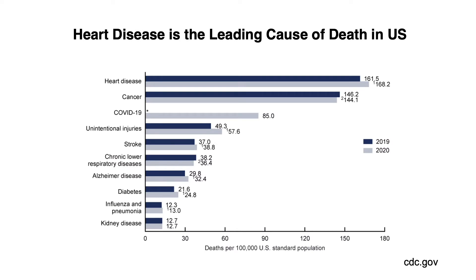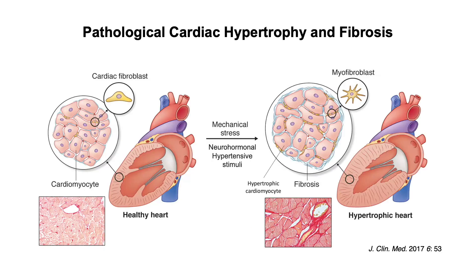Heart disease is the number one killer in the U.S. and the world. Heart disease is driven by maladaptive cardiac hypertrophy and fibrosis. Upon injury or stress, myocytes become hypertrophic and fibroblasts are activated into myofibroblasts and produce more extracellular matrix. As a result, left ventricular function is compromised.